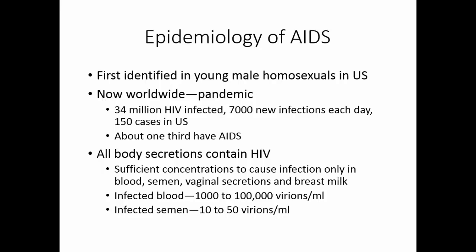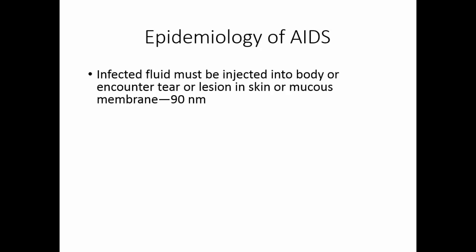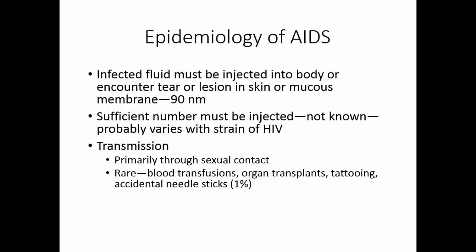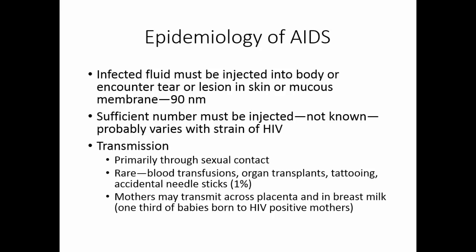Everything else contains less than that and so is much less infective. The infected fluid must be injected into the body or encounter a tear or lesion in the skin or mucous membrane. Since the virus is only 90 nanometers in size, it doesn't take a very big opening for it to get in. We also have to get a sufficient number of the virus at one time — the infective dose for AIDS is not yet known and it probably varies with each strain of HIV. Transmission is primarily through sexual contact. There have been rare instances of transmission through blood transfusions, organ transplants, tattooing, or accidental needle sticks. Only about 1% of the population who has had an accidental needle stick has become HIV positive. Mothers may transmit HIV across the placenta and in breast milk.